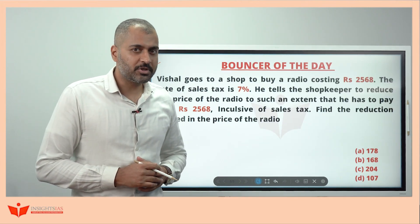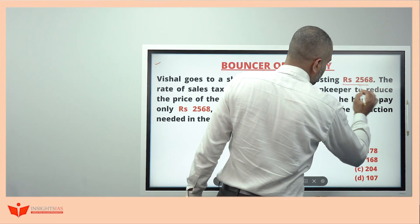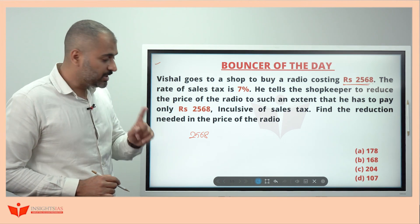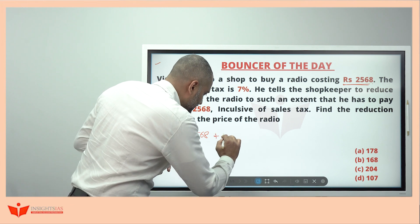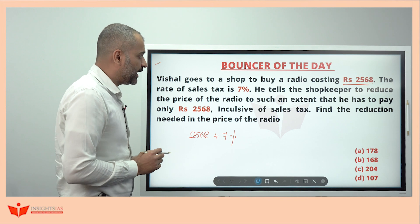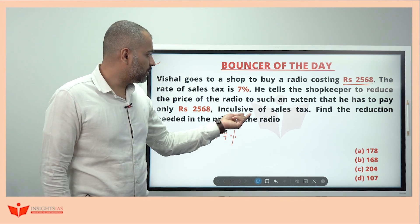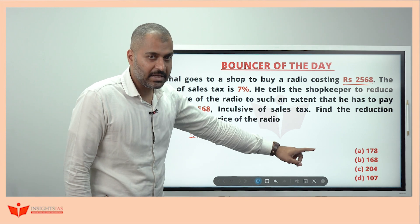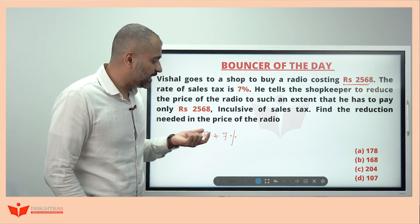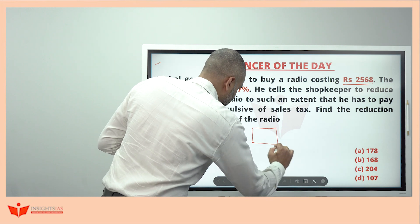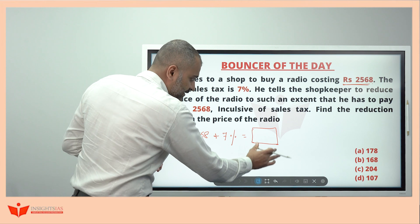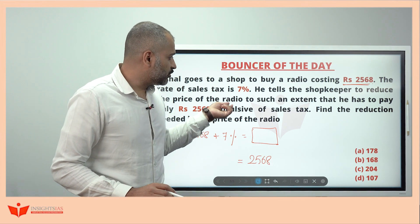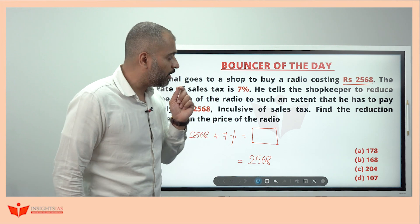Now we go to a shop to buy a radio costing ₹2568. The rate of sales tax is 7%, meaning along with ₹2568 you have to pay 7% of 2568. The shopkeeper is told to reduce the price to such an extent that the buyer pays only ₹2568 inclusive of sales tax — rather than paying 2568 plus 7%, he pays only ₹2568 total.